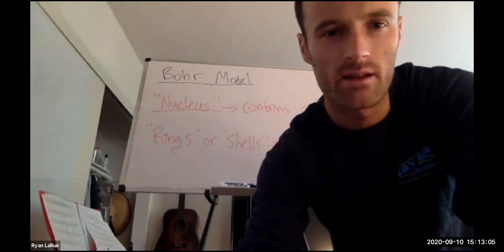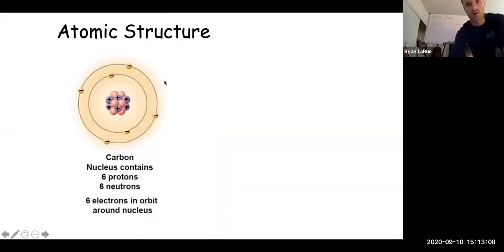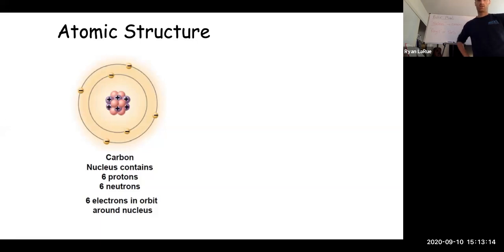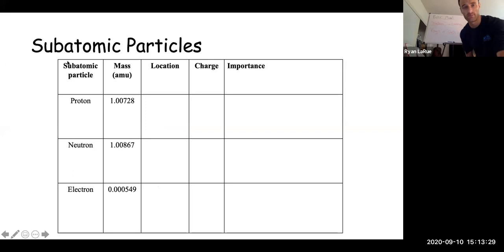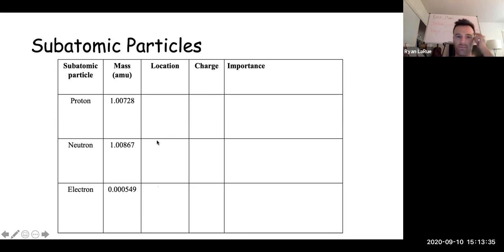That's a representative Bohr model on the slide, but we're going to be drawing more examples with a nucleus and electrons orbiting around it. Now I want to talk about these subatomic particles. We're going to make a table with location, charge, and importance for the proton, neutron, and electron. A subatomic particle means it is within the atom — our three important subatomic particles are protons (abbreviated P+), neutrons (N0), and electrons (E−).